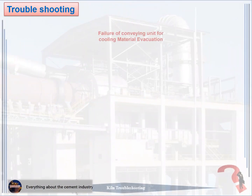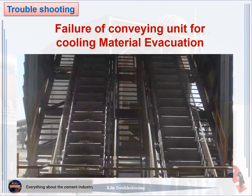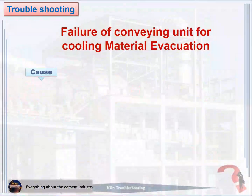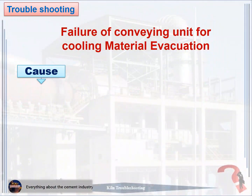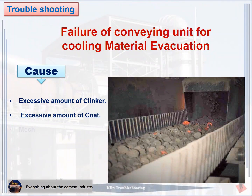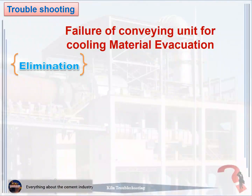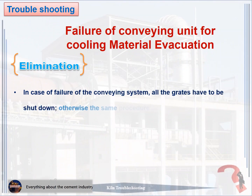Problem 7: Failure of conveying unit for cooling material evacuation. The causes: one, excessive amount of clinker; two, excessive amount of coat; three, mechanical or electrical reason. How to eliminate: in case of failure of the conveying system, all grates have to be shut down — otherwise the same procedure is to be adopted as for failure of clinker crusher.